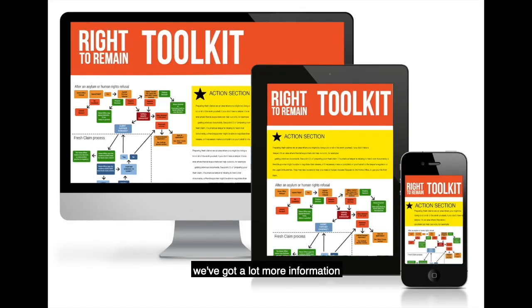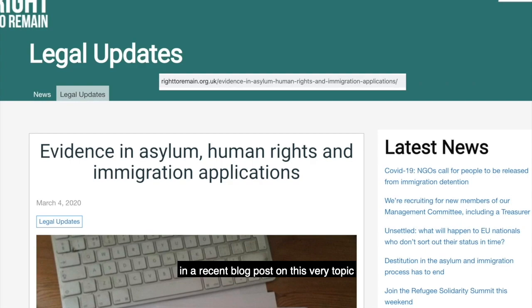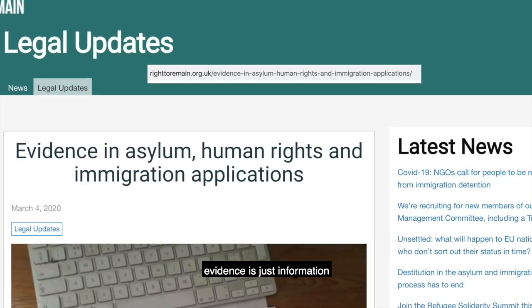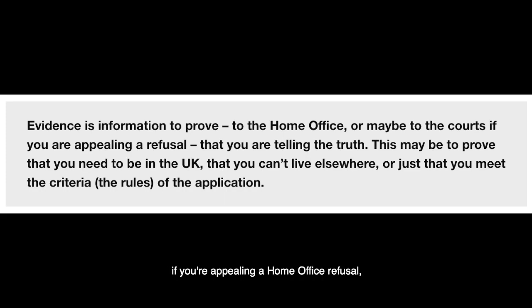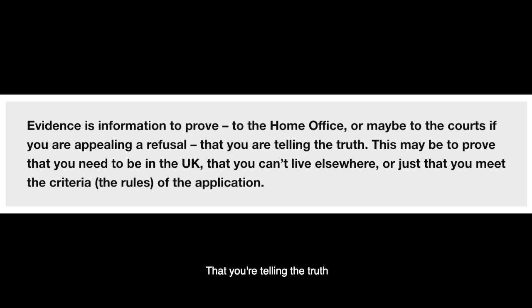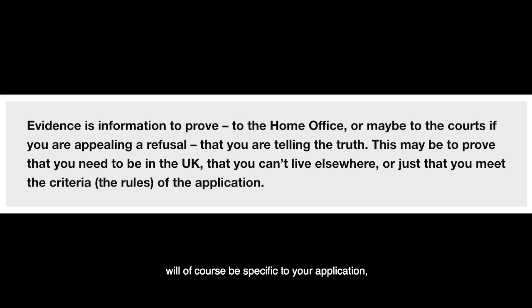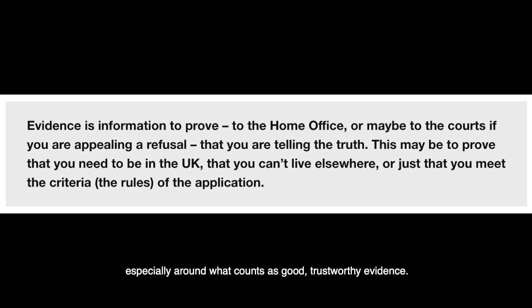As with all these videos, we've got a lot more information about the kinds of things I'll be saying in the Right to Remain toolkit, and particularly in a recent blog post on this very topic. At a basic level, evidence is just information. It's information to prove to the Home Office, or to the courts and tribunal if you're appealing a Home Office refusal, that you're telling the truth — about what has happened to you, why you need to be in the UK, or that you meet the criteria of the application you're making. There are general rules and principles about evidence that will need to be met, especially around what counts as good, trustworthy evidence.